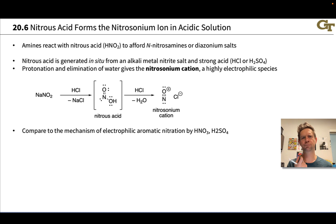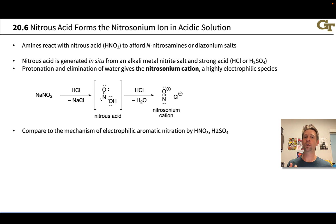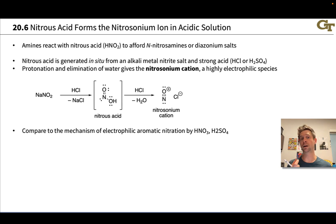When the amine is primary, we get diazonium salts, which are fantastic electrophiles. When the amine is secondary, we get nitrosamines or N-nitroso compounds. These are not super useful on their own, but they have very important practical implications because nitrosamines are notoriously carcinogenic and give rise to DNA alkylators in biochemical systems. Nitrosamines come from reactions of amines in the environment and in consumer products with nitrites, which are also found in a number of food items, making them a potentially problematic carcinogen.